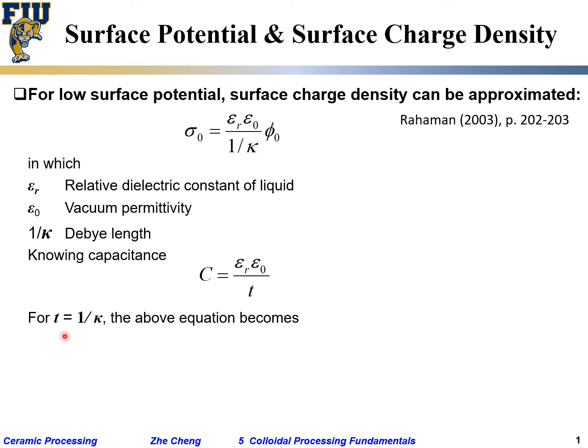For the distance between two parallel surfaces, the surface charge density can be rewritten by replacing 1/κ (the Debye length) with the thickness t. As a result, the charge density becomes simply the capacitance times the potential: σ₀ = C·φ₀.